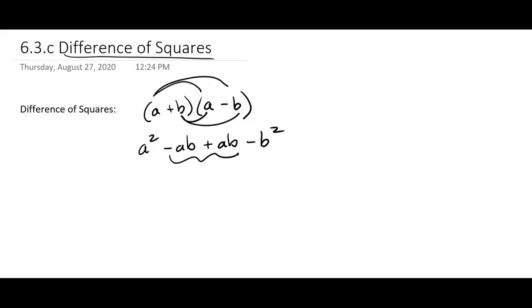What happens is those middle terms, they drop out, because you've got negative ab and plus ab, those make zero. So you just get a squared minus b squared.